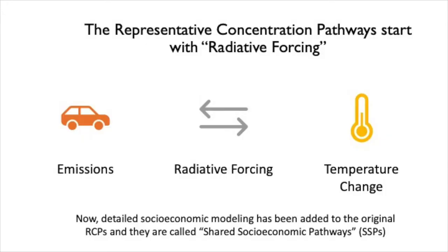But radiative forcing doesn't relate to human choices, and it doesn't relate to what's going to happen in my watershed or region. So with radiative forcing, we work both backwards and forwards to turn it into decision-relevant information. Working backwards, radiative forcing can be turned into emission pathways consistent with different energy decisions. Working forwards, using global climate models, these scenarios can be translated into estimates of how they affect temperature, precipitation, heat waves, heavy rainfall, hurricanes, sea level rise, glaciers, and more.